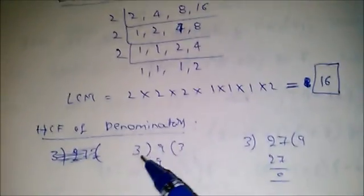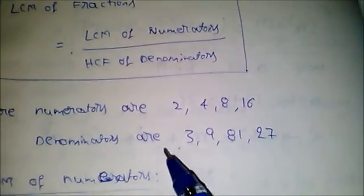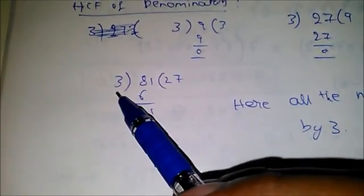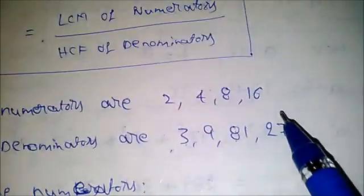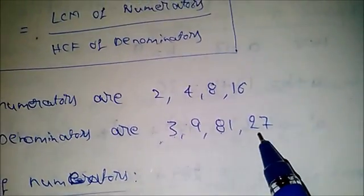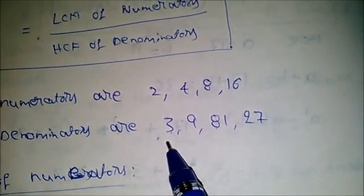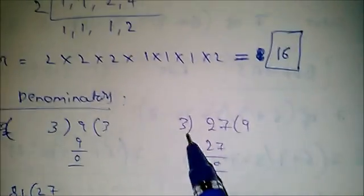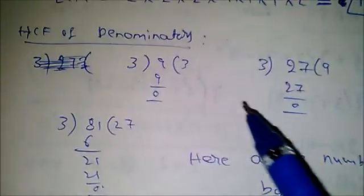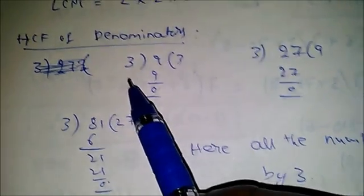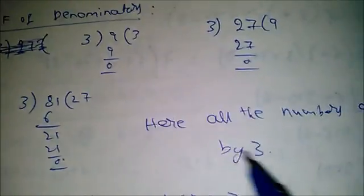If remainder is 0, consider the same least value and divide the next value: 81 divided by 3 gives remainder 0. Then 27 divided by 3 gives remainder 0. All values are divided by 3, so the HCF is 3.